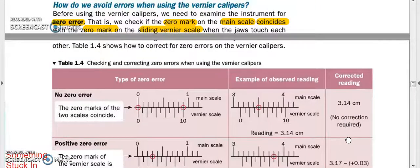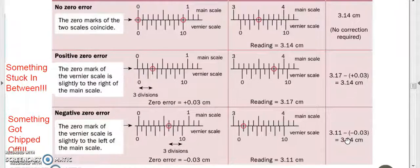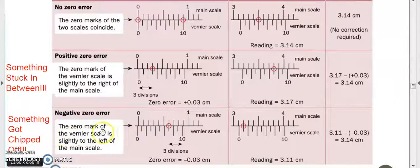To avoid errors in vernier calipers, make sure there's no zero error. Zero error simply means that something's stuck in between. In other words, when the scale is at zero, the vernier scale cannot go all the way back. What you do is find out how much is that amount that is stuck - 0.03 centimeters - you just subtract it from your final reading. This one, something got chipped off, so you need to add it in the end because even when it's zero, it reads more than that, so you need to add an amount of 0.03.